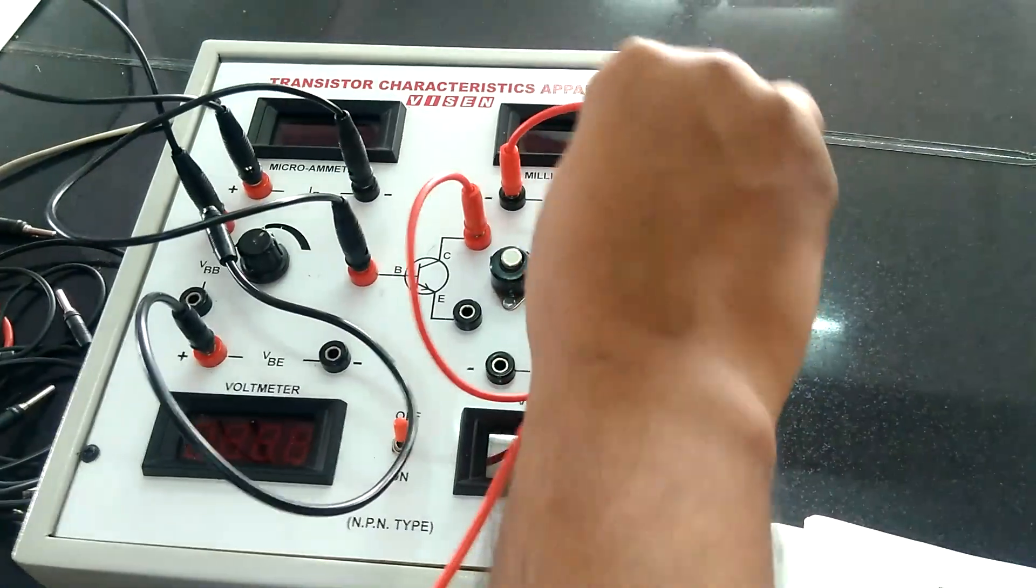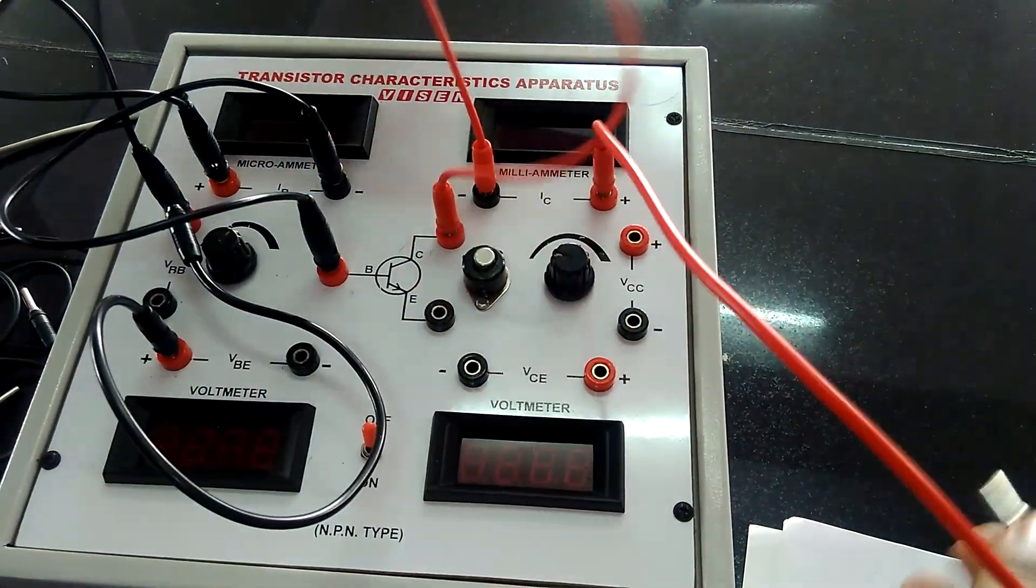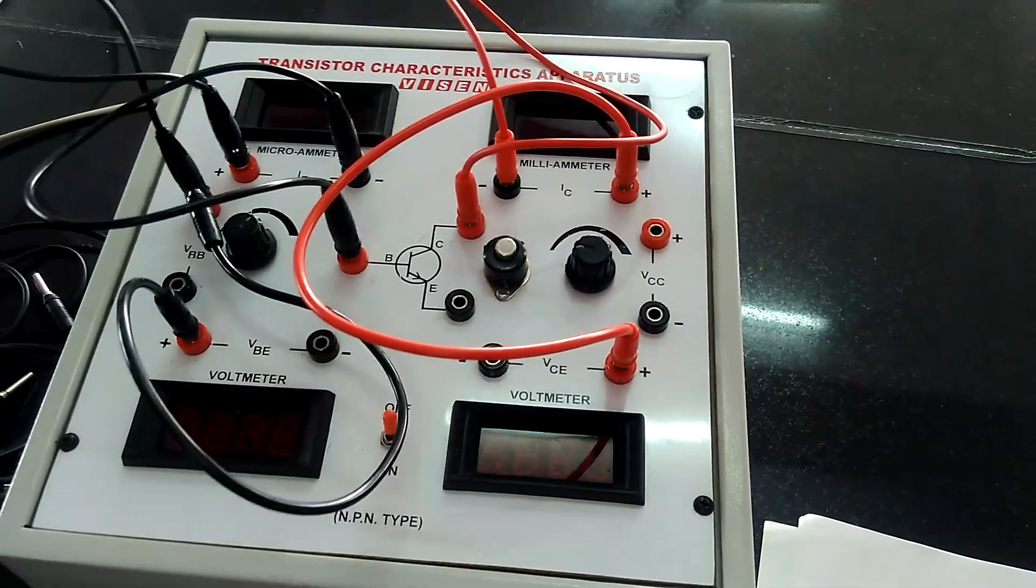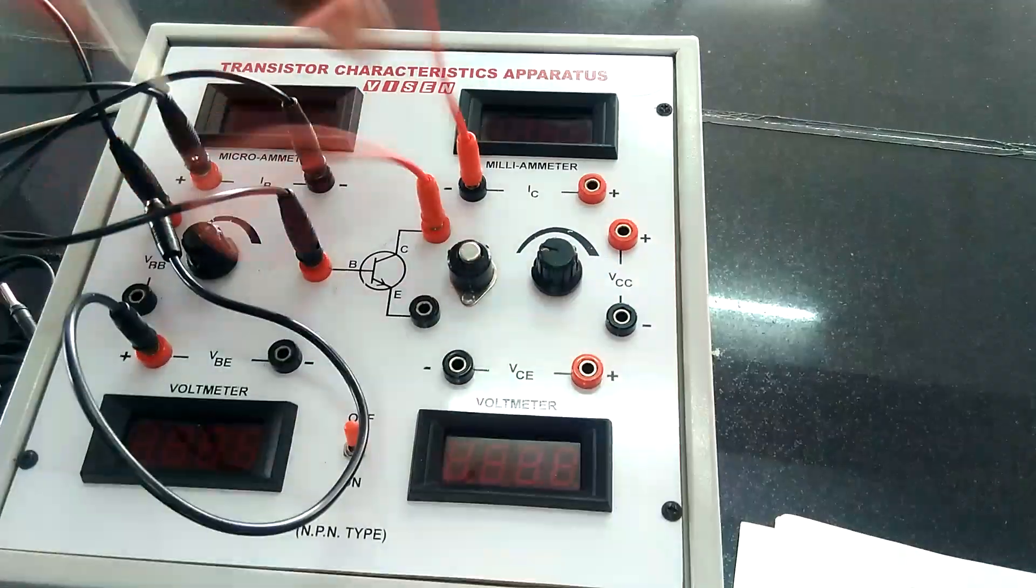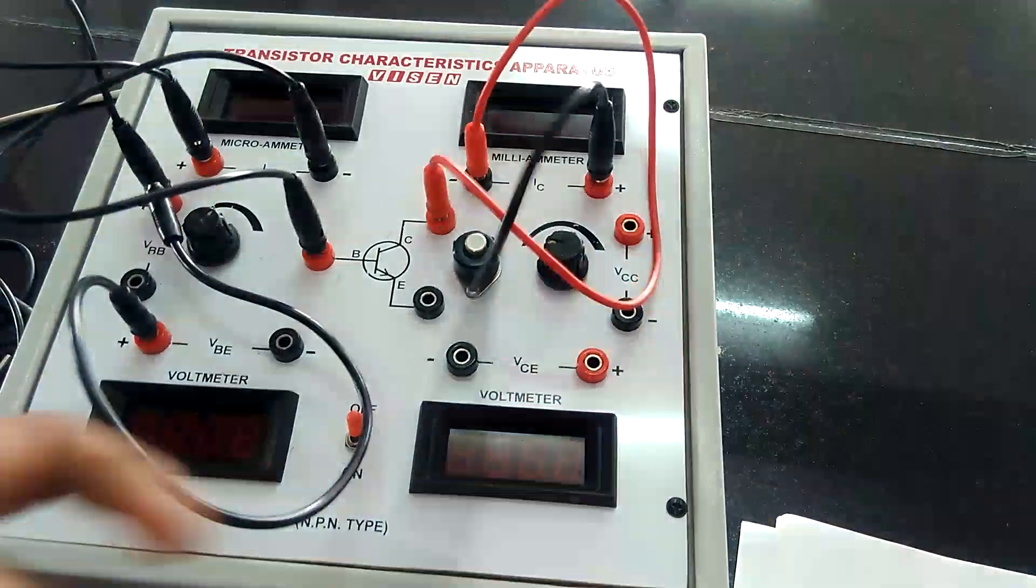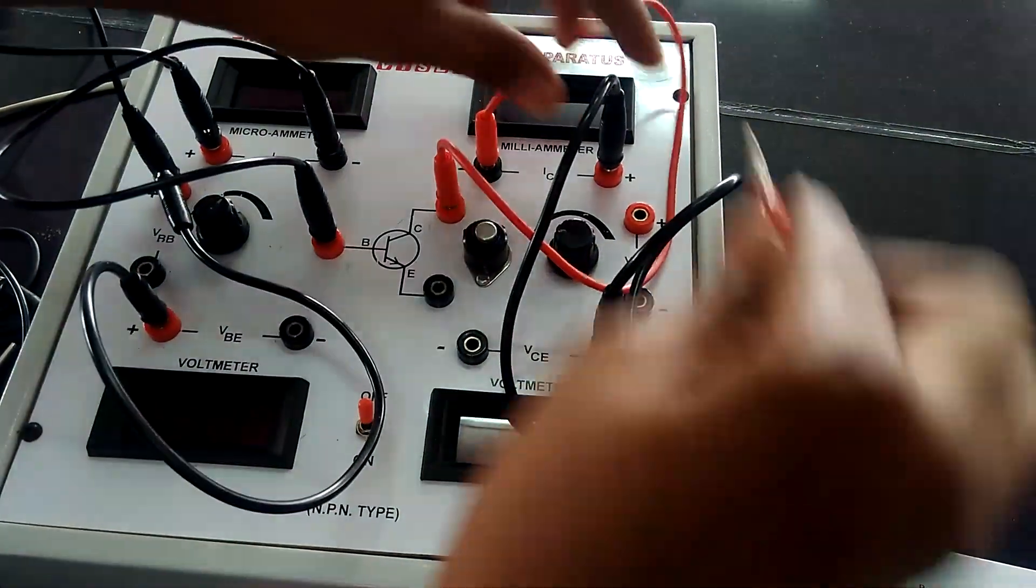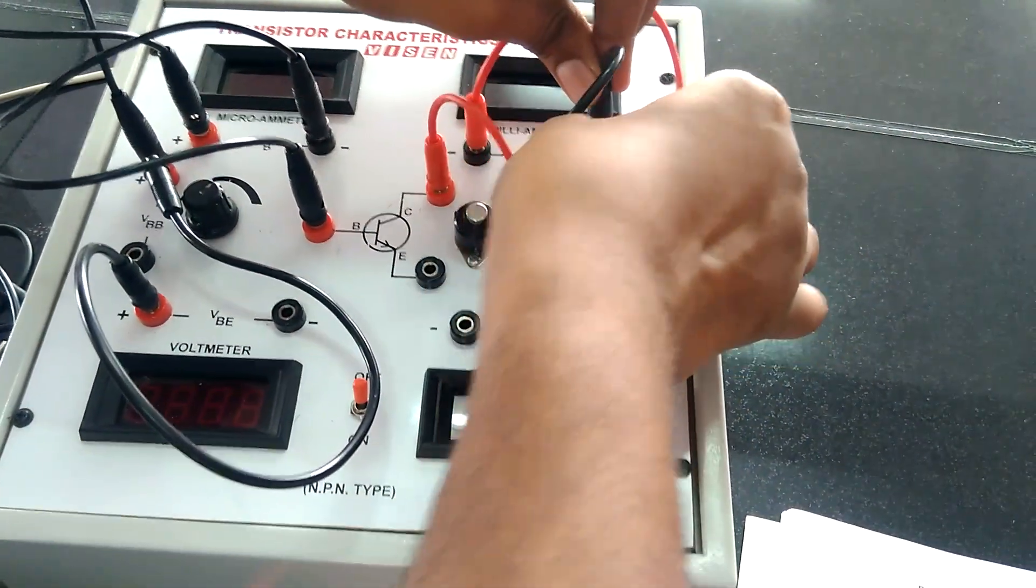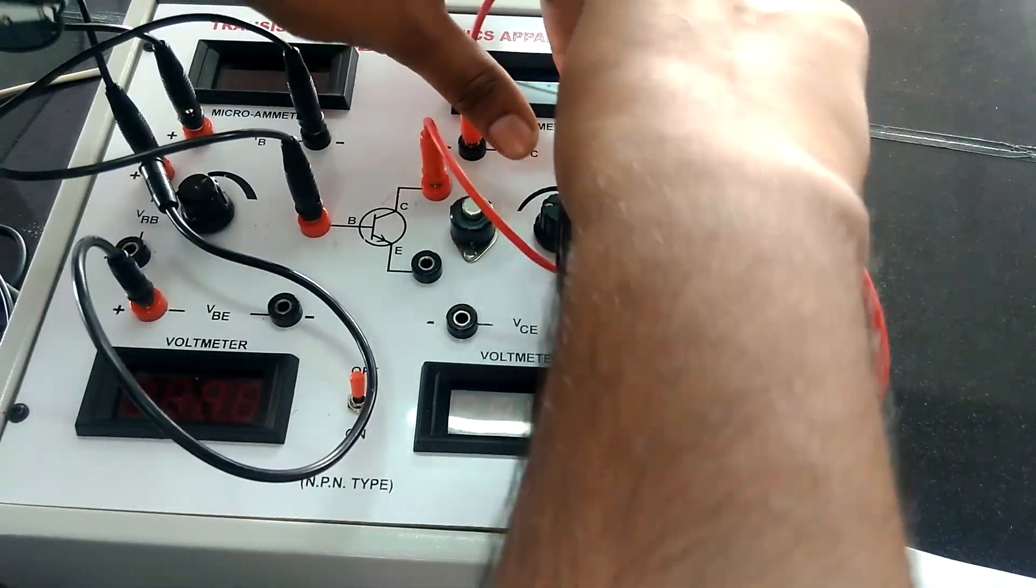Then positive of IC to the positive of VCE and take another wire. Now take another wire and turn IC to positive of VCE.